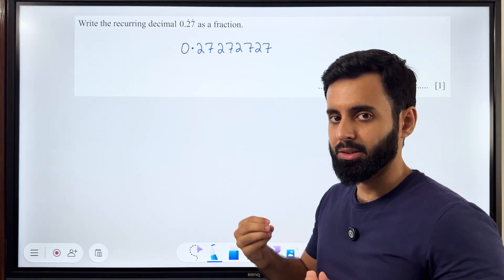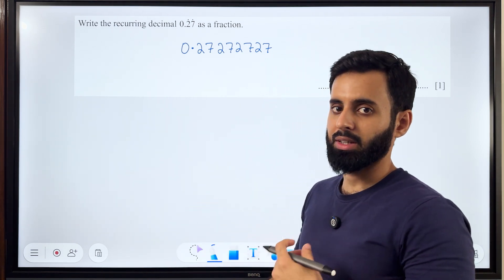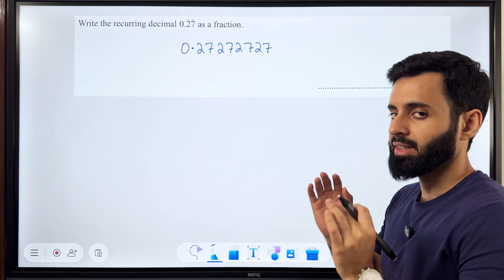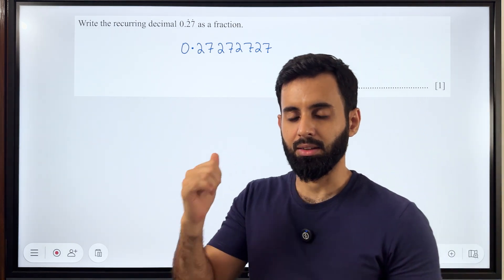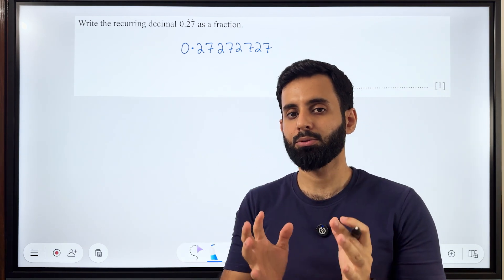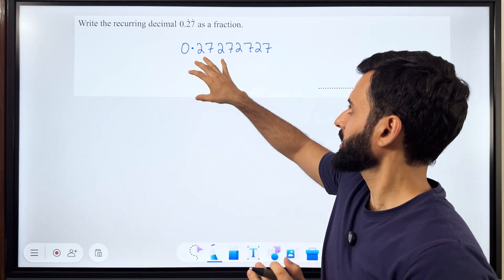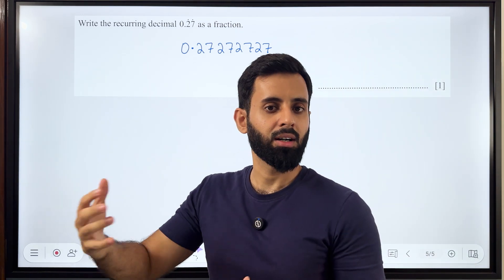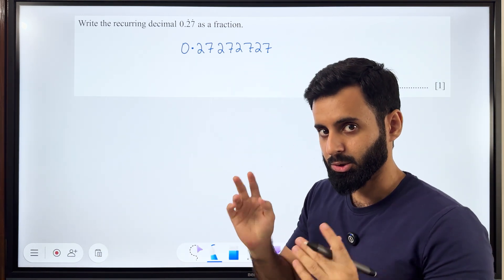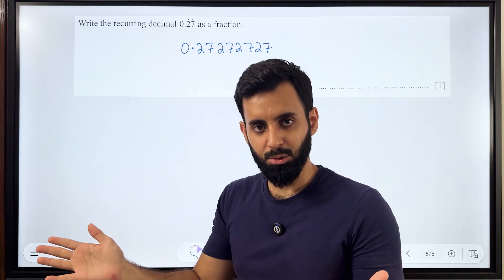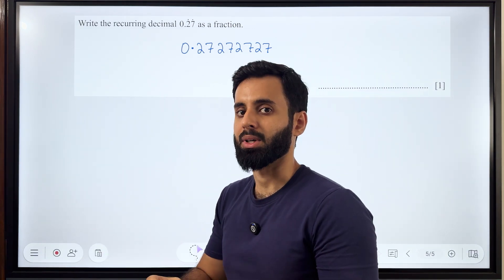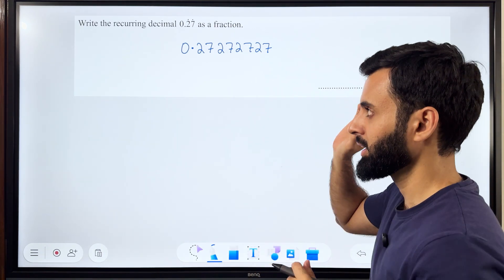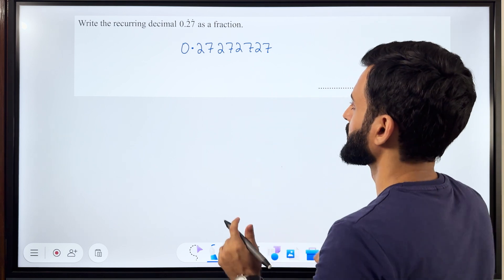There is a pretty standard rule of how to convert a recurring decimal to a fraction. First understand the idea, then we'll see how it works. The idea is that we're going to form two numbers by taking the original decimal, multiplying it by 10, 100, or any power of 10, and make two numbers so that upon subtracting them, the recurring decimal part gets eliminated.